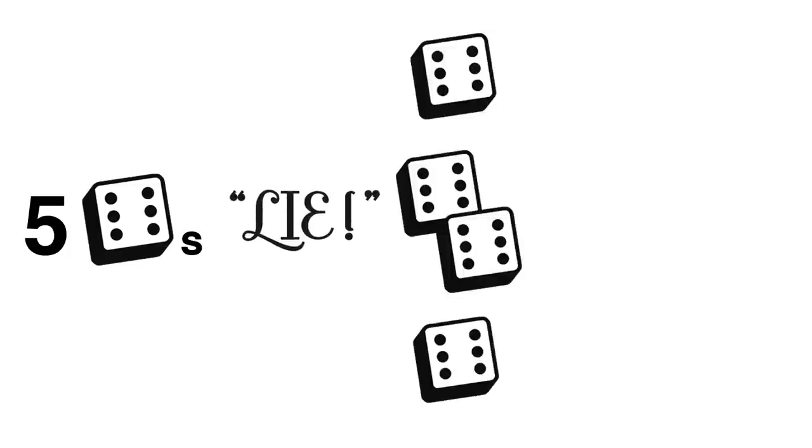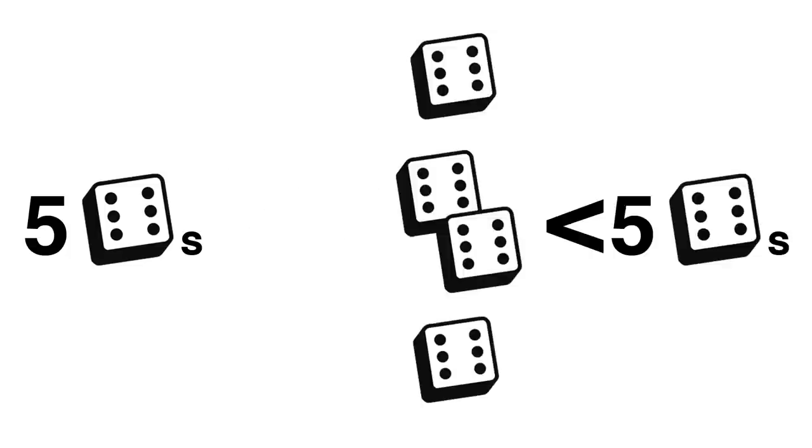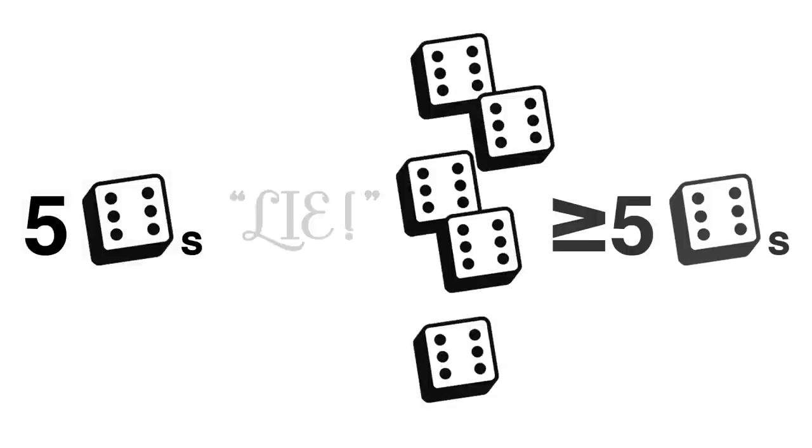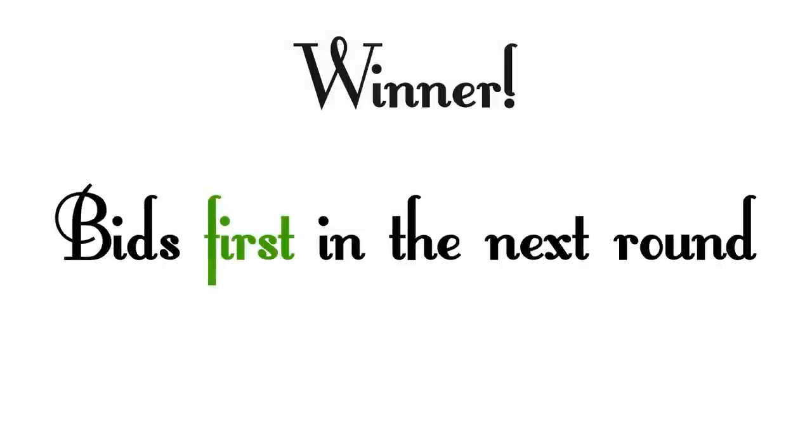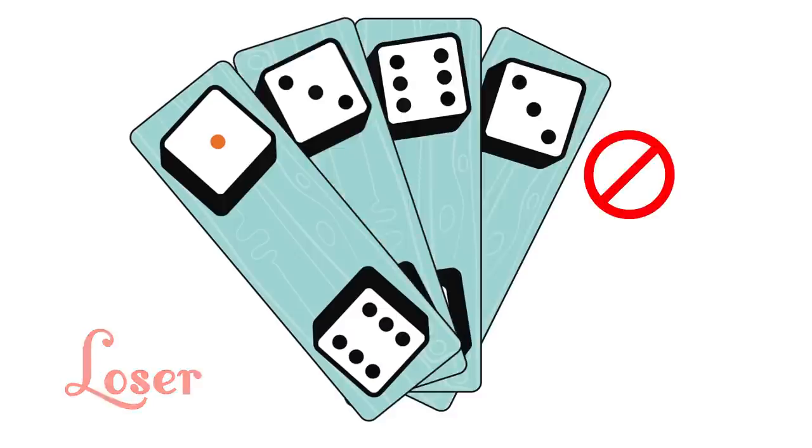If the total amount amongst all players is less than the bid that was challenged, then the challenger was correct and wins the round. If the total amount amongst all players is equal to or greater than the bid that was challenged, then the challenger was incorrect and loses the round. The winner will gain the right to start the next round of bidding and the loser must draw one less card than he had in the previous round.